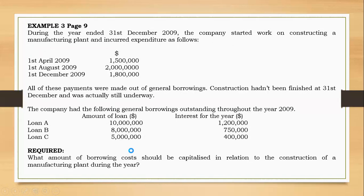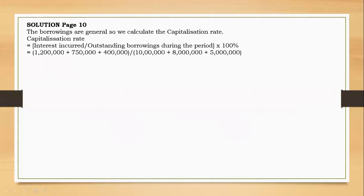After dividing, you get your capitalization rate. This figure here is 10.22% — so 10.22% is the capitalization rate. After this, you apply this capitalization rate to the borrowings incurred in the drawdown.